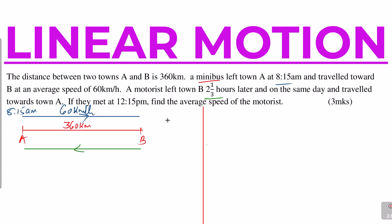To get the time the motorist left: the minibus left at 8:15, so two and a third hours later is two hours and 20 minutes added to 8:15, which gives us 10:35. So the motorist left at 10:35.